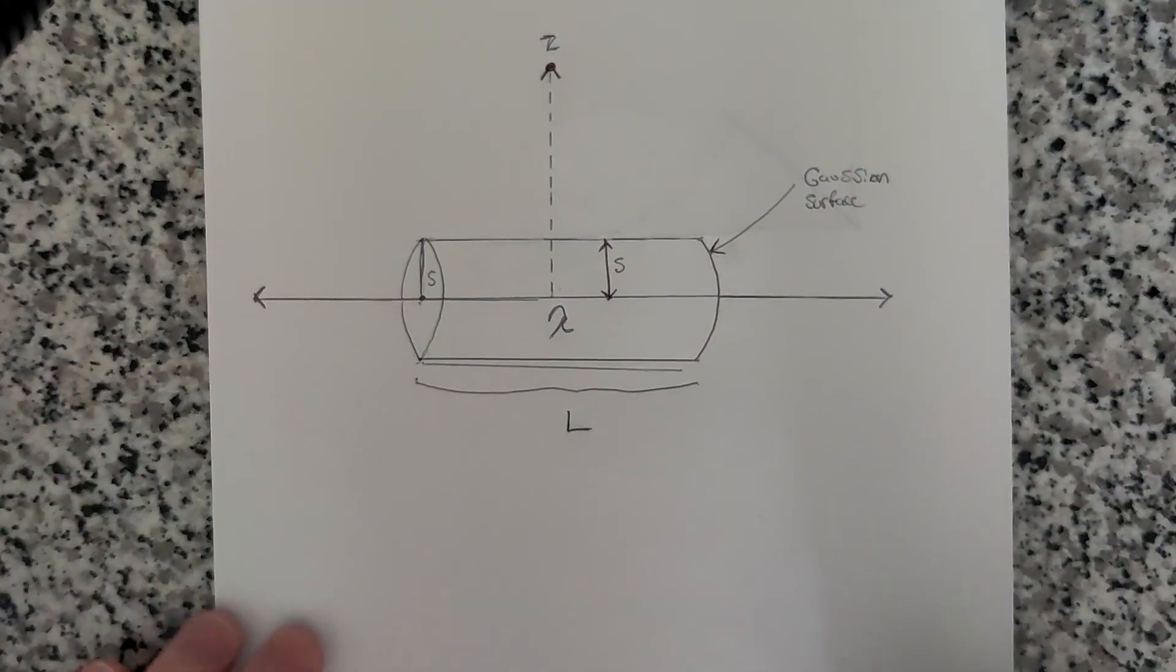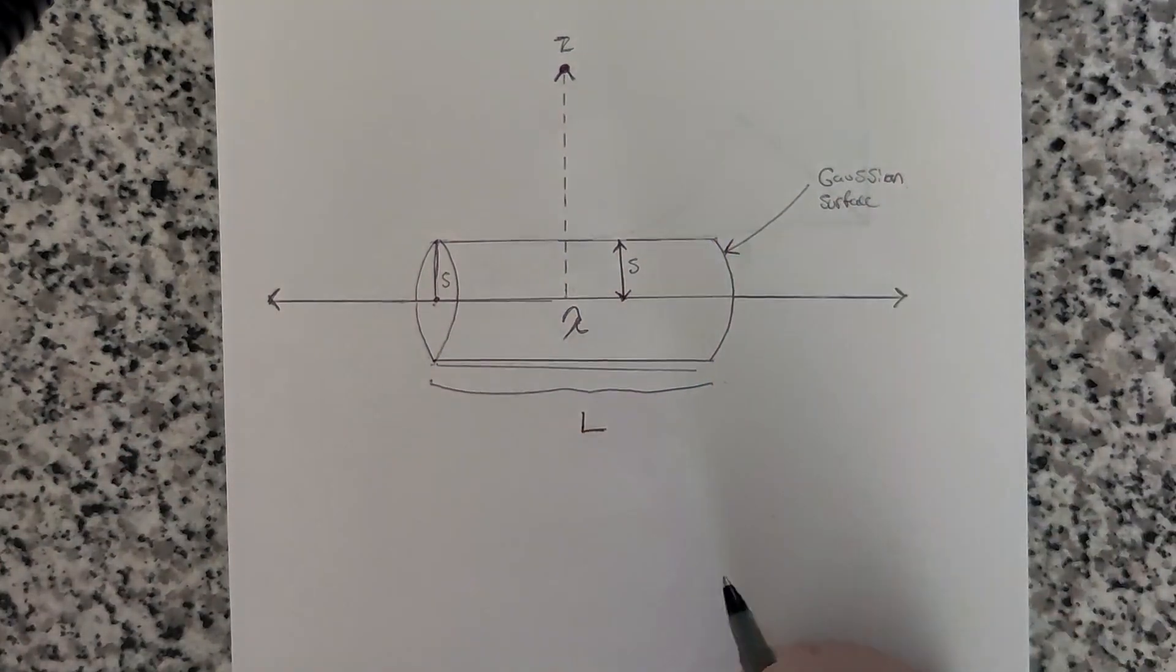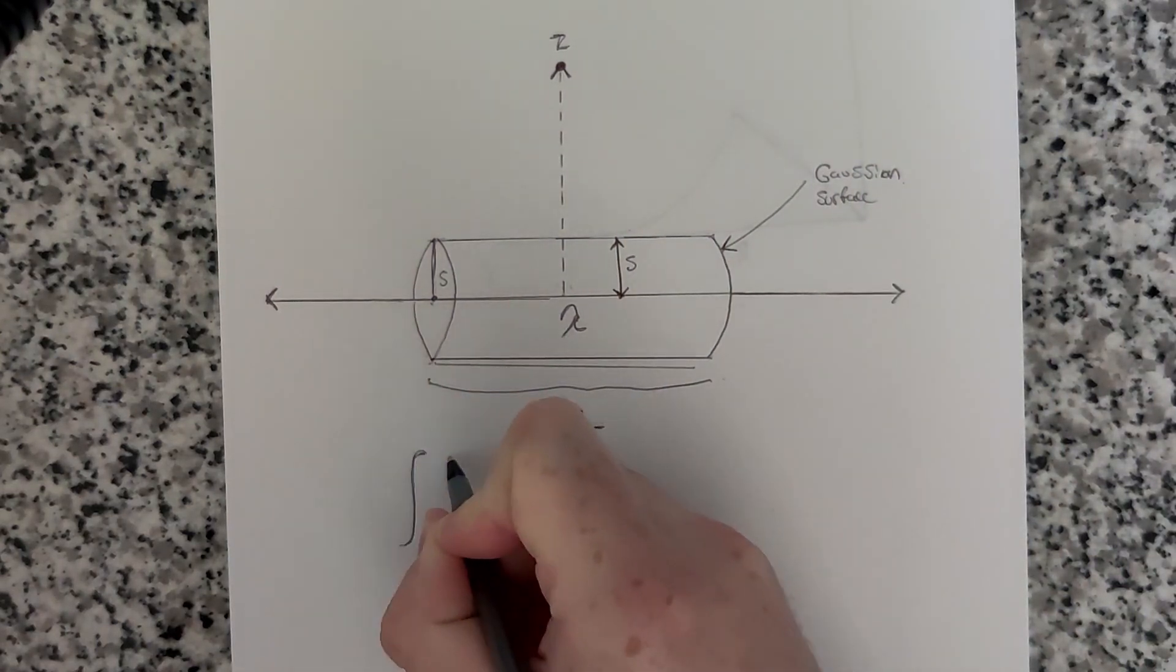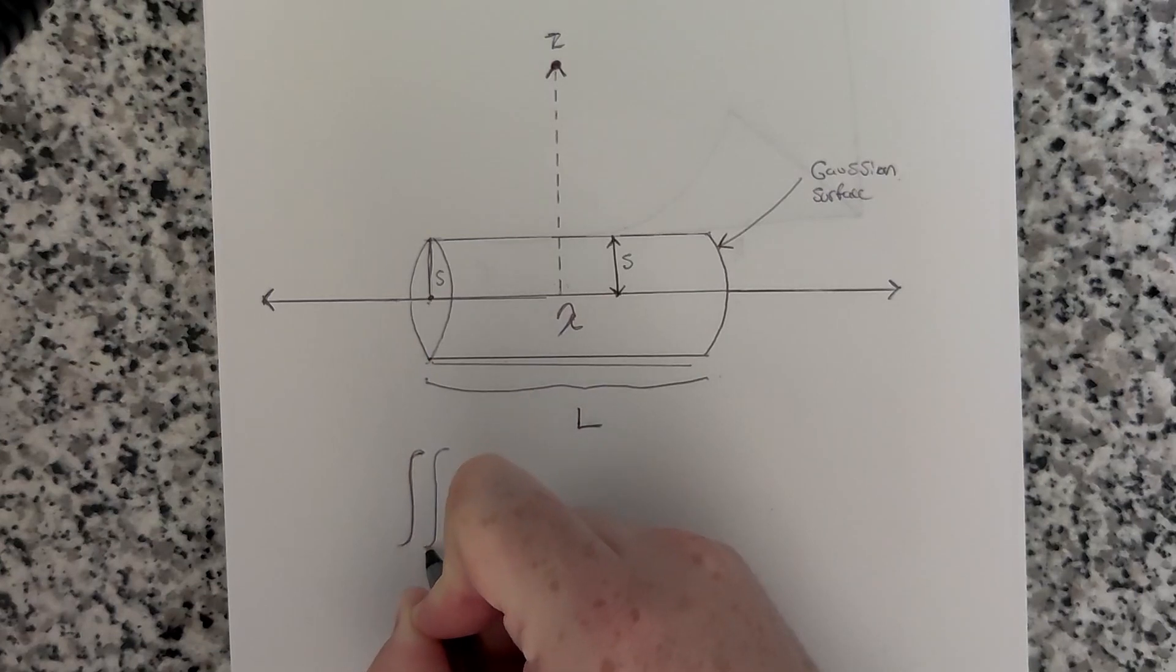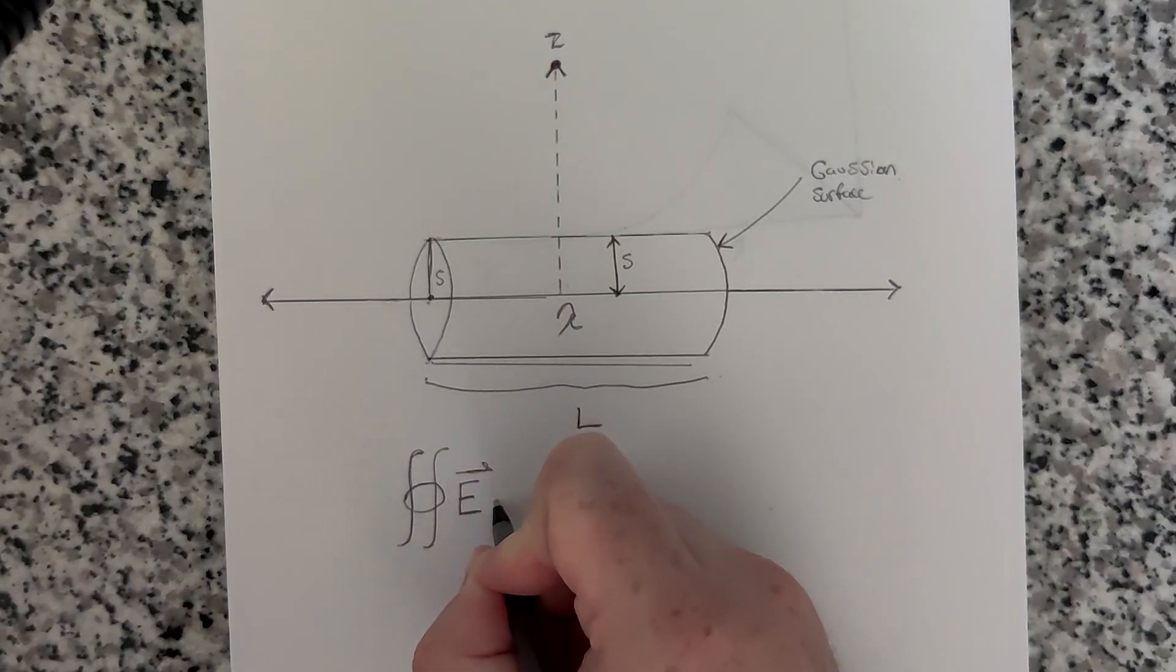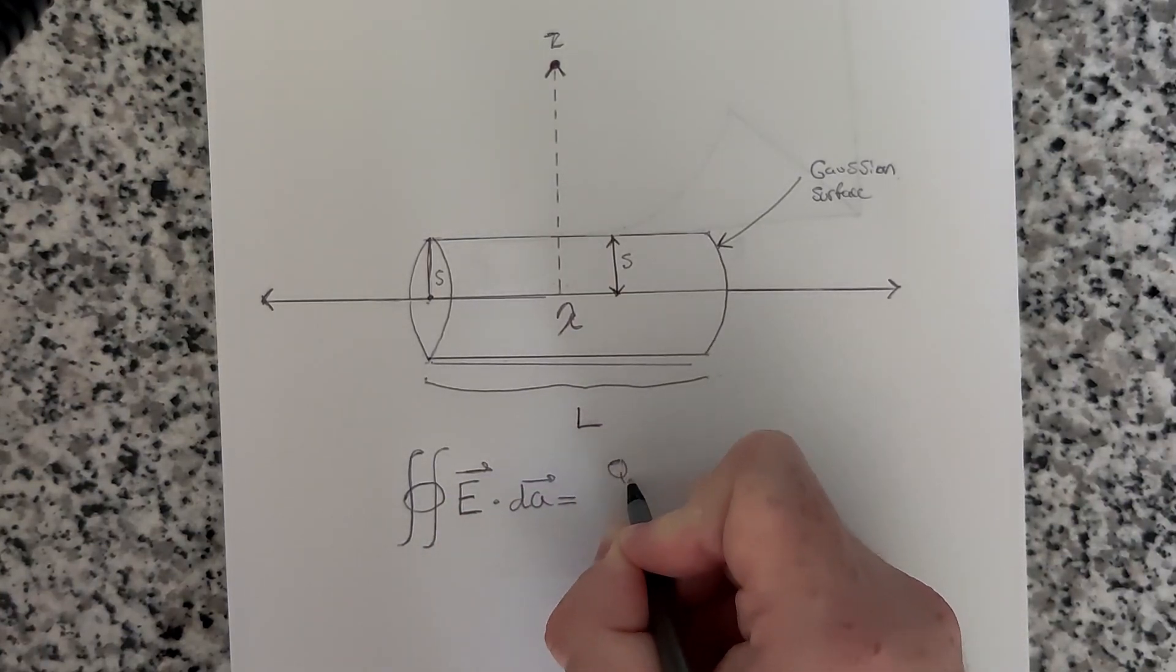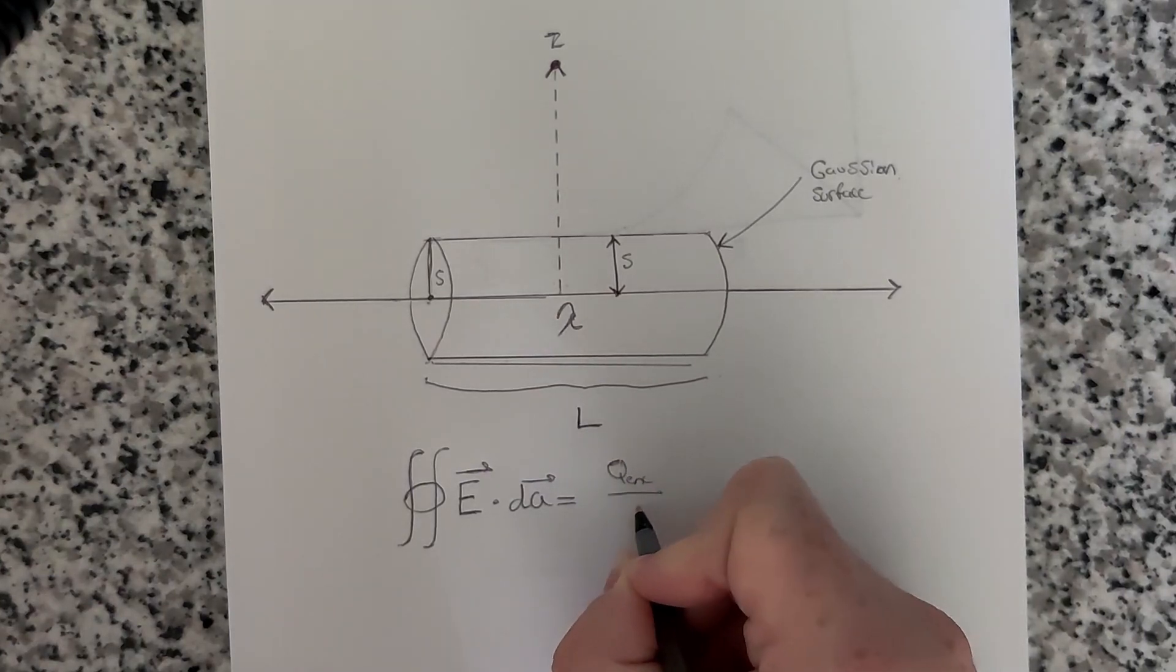So we can just go ahead and directly apply Gauss's Law to this. So we have that the flux through our Gaussian surface, integral of E dot dA, is equal to the charge enclosed of our Gaussian surface divided by epsilon naught.